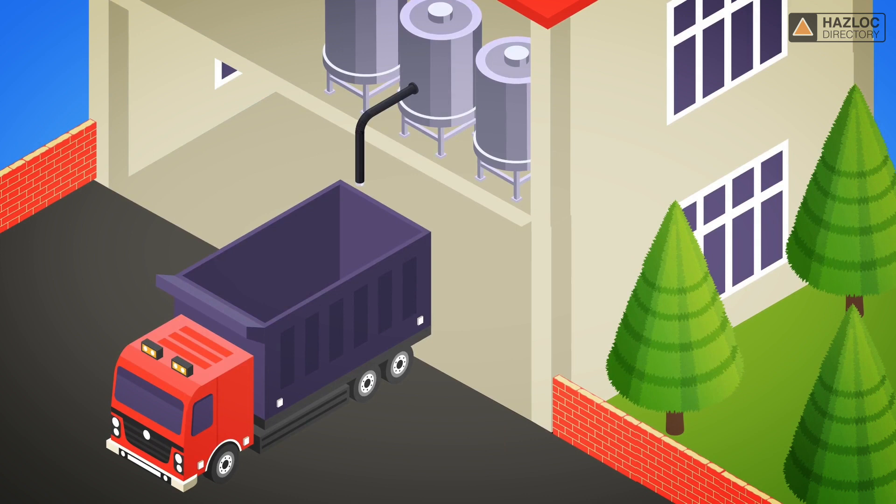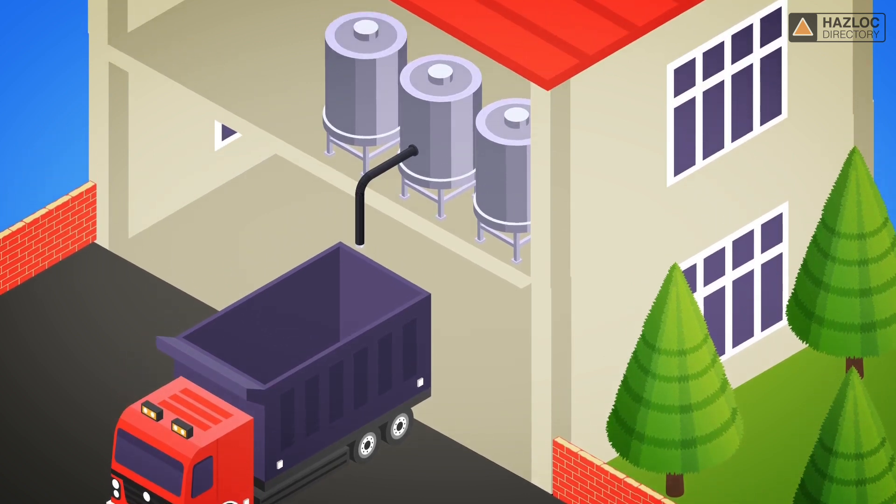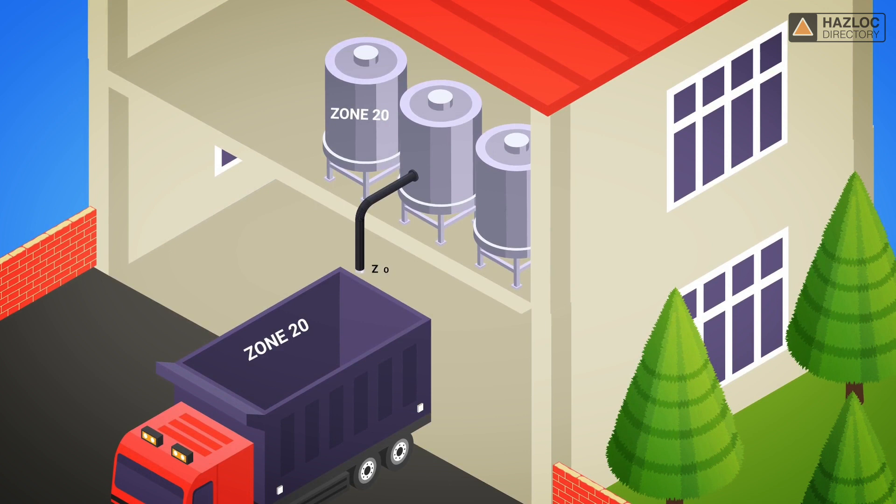To make it easier to distinguish among the three zones, consider this diagram of a typical dust handling plant. The areas classified as Zone 20, Zone 21, and Zone 22 have each been identified.